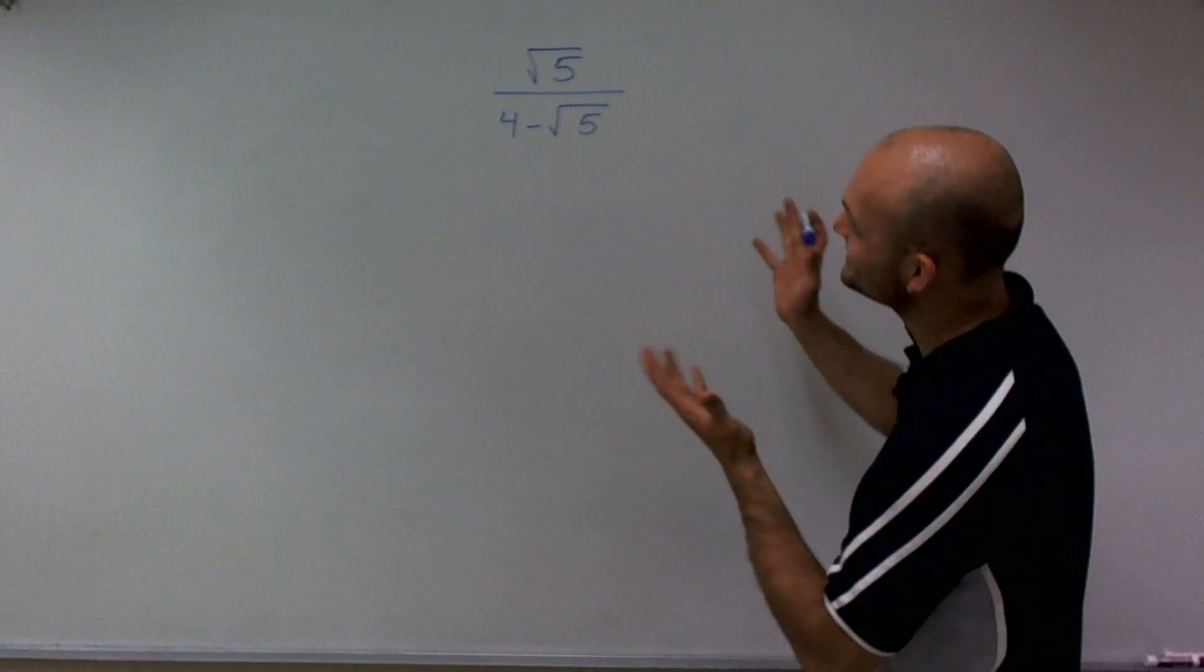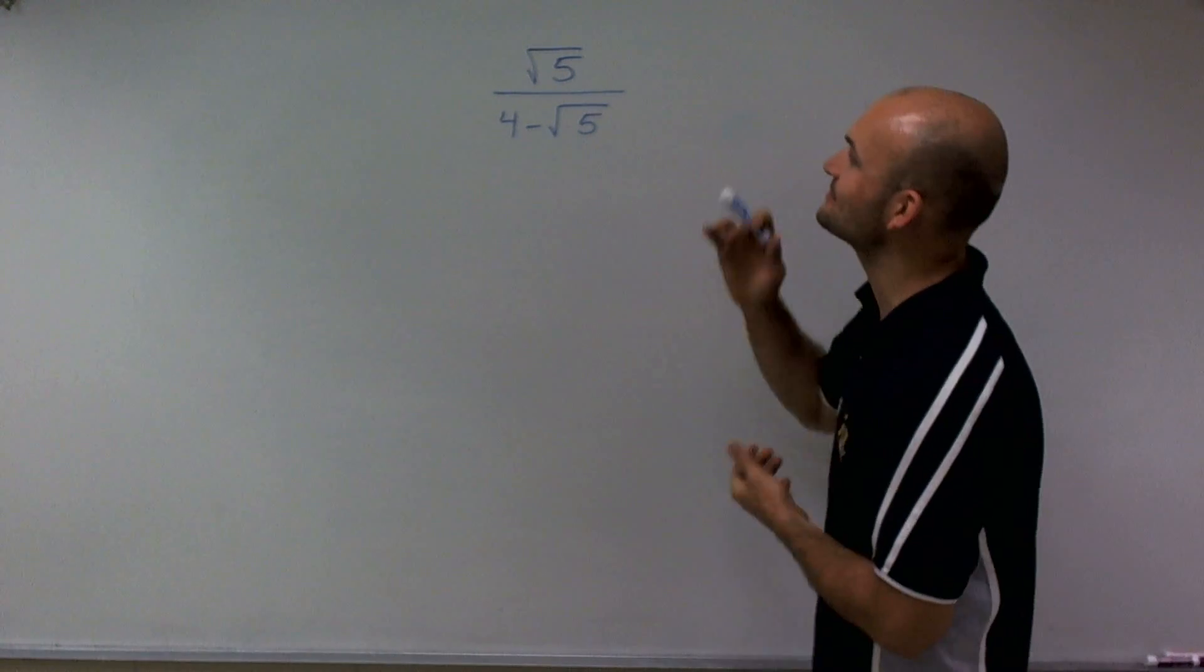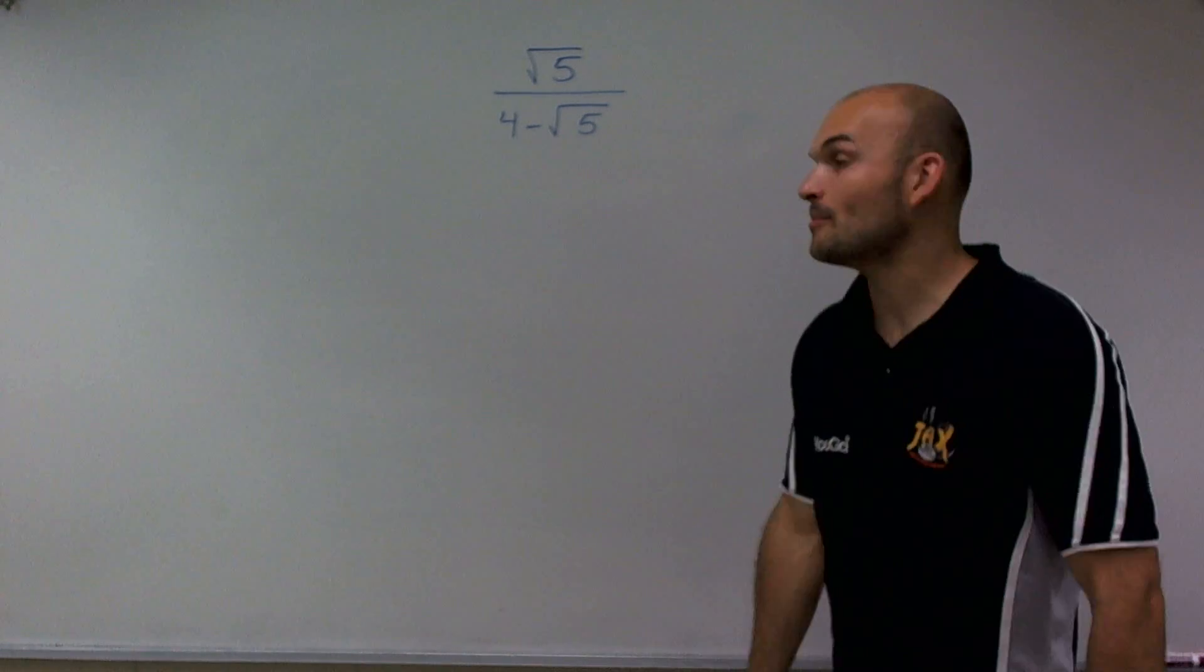Welcome. What we're going to do is simplify this radical expression: square root of 5 divided by 4 minus the square root of 5.